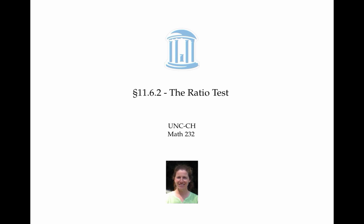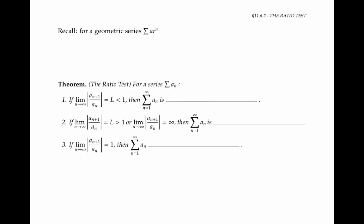This video is about the ratio test, a test that can be used to prove that a series converges or diverges. The ratio test is all about looking at the ratio of consecutive terms. To figure out how it works, it can be helpful to think about geometric series first. Recall that for a geometric series, the ratio of consecutive terms is given by this number r.